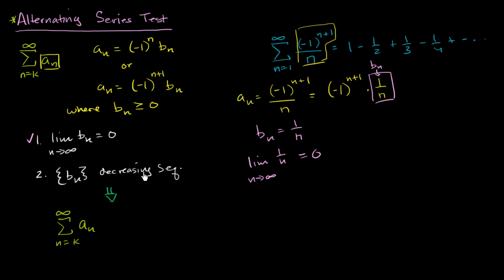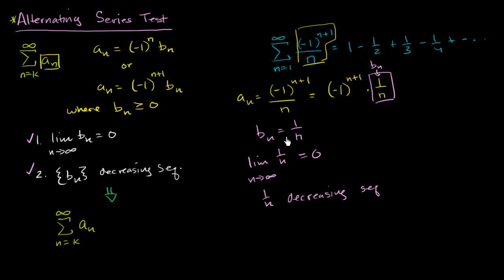This is clearly a decreasing sequence — as n increases, the denominators increase, and with a larger denominator you get a lower value. So one over n is a decreasing sequence for the n's we care about. This is satisfied as well. b sub n is always greater than or equal to zero, its limit as n approaches infinity is zero, and it's a decreasing sequence. Therefore we can say that our original series converges.